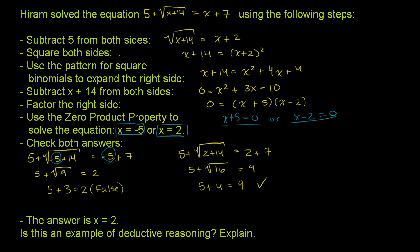Let's see what else he did. Then this becomes the square root of 9, this becomes 2. And then you get 5 plus 3 is equal to 2, which is false. This is not true. And he wrote that down.